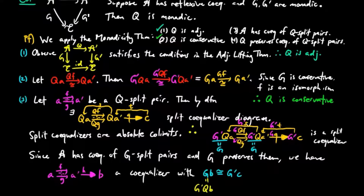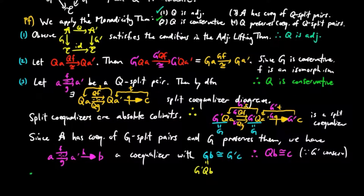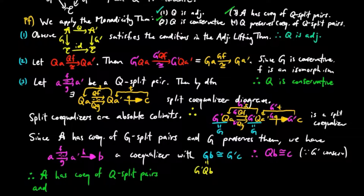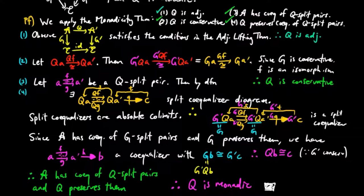Then since GB is equal to G prime QB, we have QB is isomorphic to C, since G prime is conservative. Therefore, the category A has co-equalizers of Q split pairs, and Q preserves these co-equalizers. Therefore, Q is a monadic functor, which completes the proof.